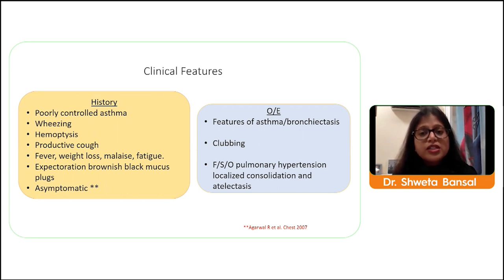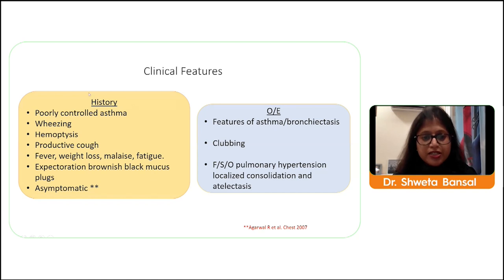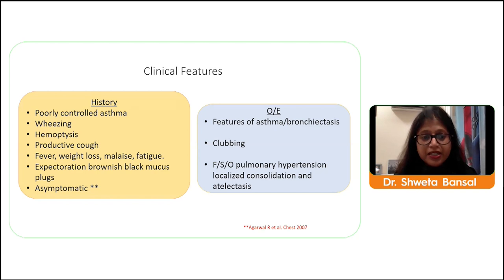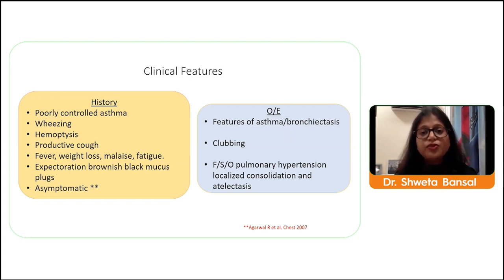The most important question is when to suspect ABPA. The most clinching clue is a patient with asthma poorly controlled even on adequate treatment with good compliance. Other features include history of wheezing, hemoptysis, and expectoration of brownish-black mucous plugs due to bronchiectasis and fungi. Patients also present with non-specific constitutional symptoms — fever, weight loss, malaise, and fatigue — which are easily confused with tuberculosis.